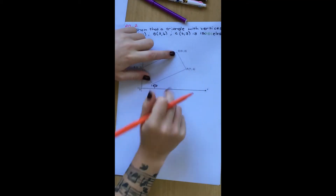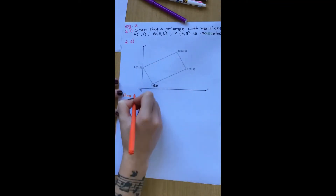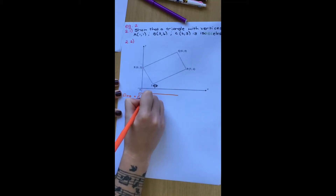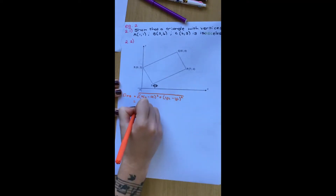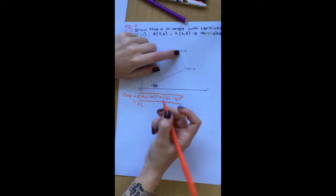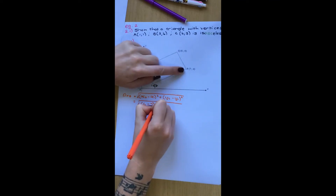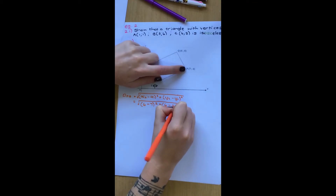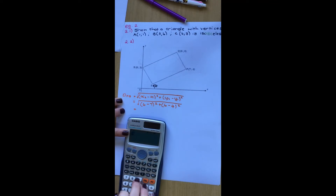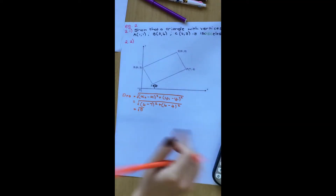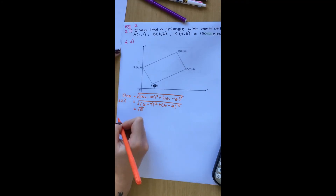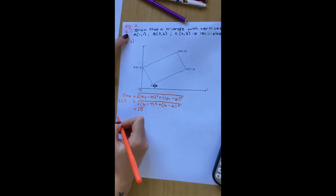We should now be familiar with the distance formula: square root of (x₂ − x₁)² + (y₂ − y₁)². So distance PQ will be: starting with Q's x — 6 minus 7, squared, plus 6 minus 4, squared. Let's check: square root of (6 − 7)² + (6 − 4)² — the answer is root 5. They told us we can leave the answer in surd form, so we'll leave it as root 5. That's question 2.2.1.